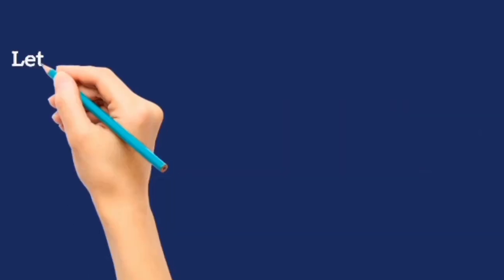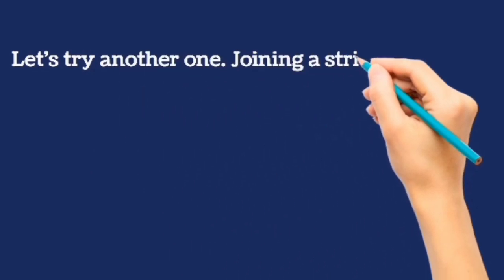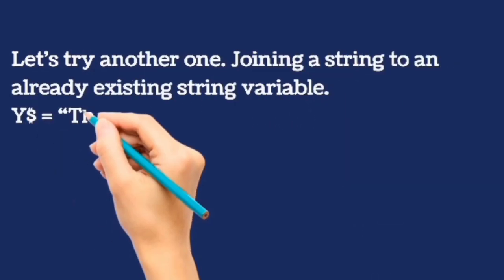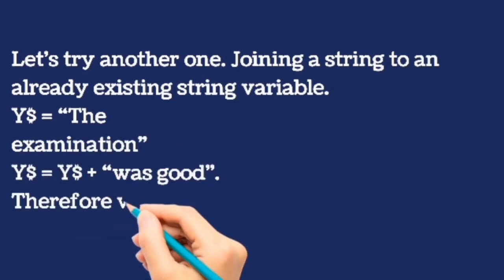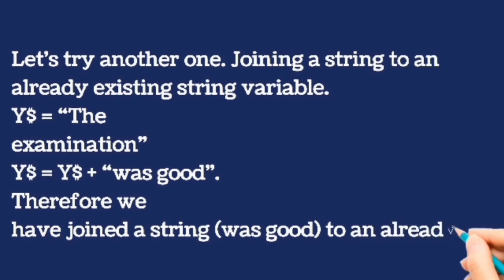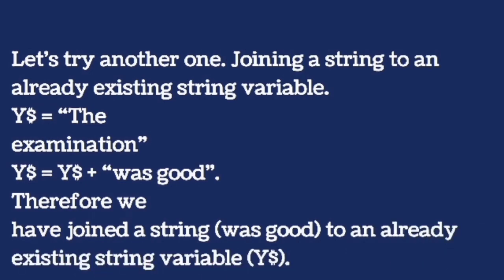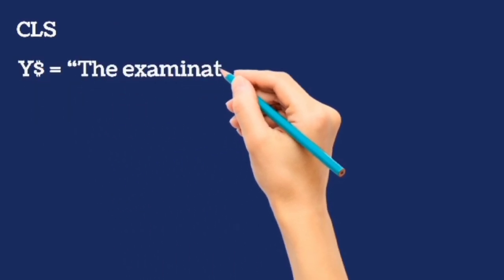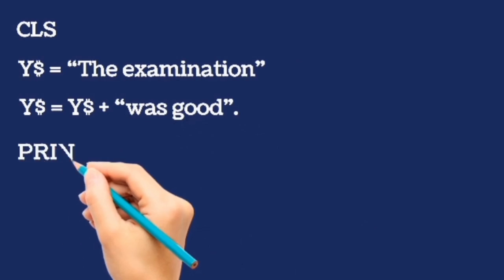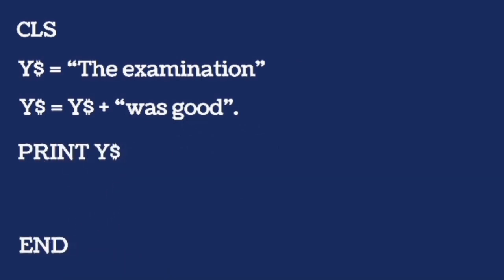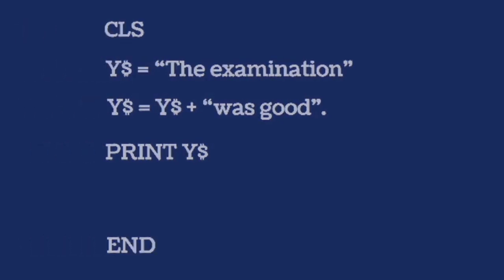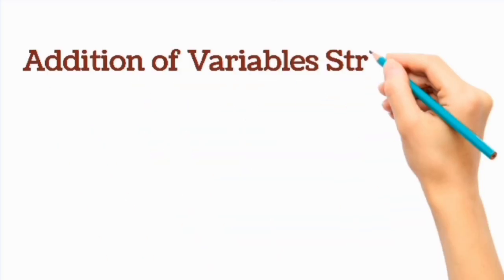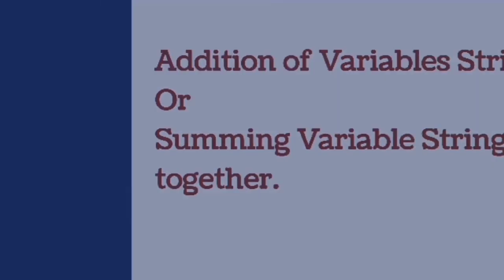Let's try another one joining a string to an already existing string variable. Y string equals the examination. Y string equals Y string plus was good. Therefore, we have joined string was good to an already existing variable string. Y string equals the examination in inverted commas. Y string equals Y string plus was good. Therefore, the examination which is Y string plus was good, we will get the examination plus was good, which is the examination was good.